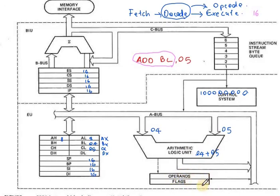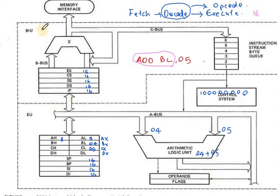We will also discuss FLAGS. The FLAGS register stores the result of the current state — the current condition of operations — in some values called flags. This is part of the 8086 architecture overview.